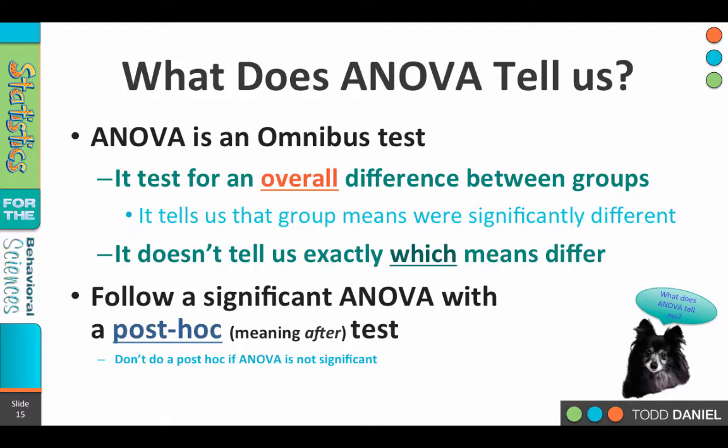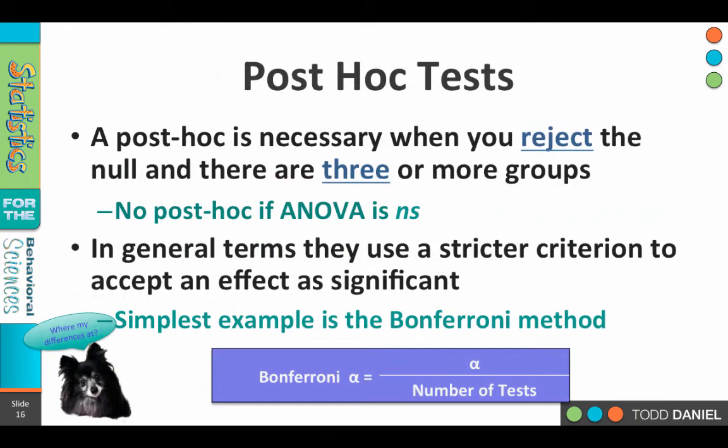What we're going to need to do is conduct an ANOVA to find out whether there are any differences, and if so, if the ANOVA is statistically significant, then we're going to follow up with a post hoc test to determine where those differences reside. We wouldn't do a post hoc test if our ANOVA was non-significant. We would only do the post hoc follow-up if the initial ANOVA told us that there are differences in there somewhere, and now we have to go and find them.